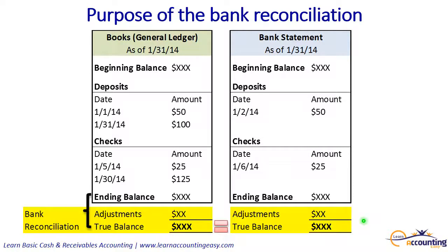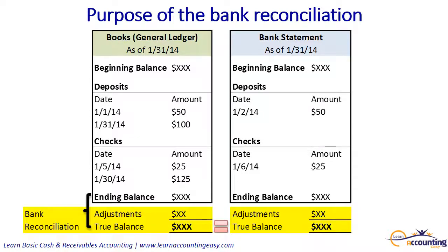The bank statement is cut off as of January 31st. So we could have a deposit initiated on January 31st that hasn't cleared the bank yet — it won't show up on the bank statement. Similarly, a check written at the very end of the month that didn't clear as of January 31st wouldn't appear here either. So the ending balance according to the bank is not going to agree with the ending balance according to our books. But we can take either ending balance and make different kinds of adjustments to arrive at the true balance, and the true balance from both sides should be equal.